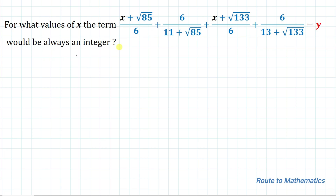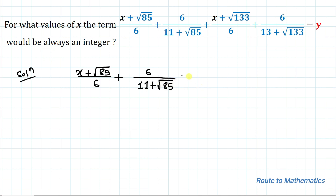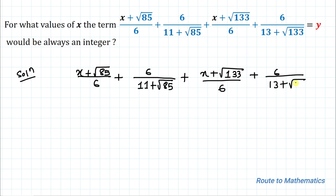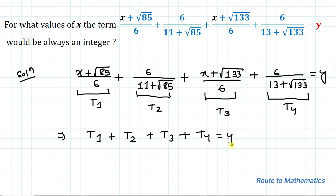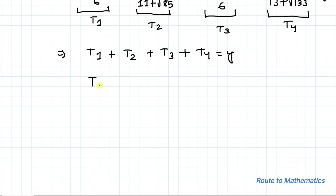So we are asked for what values of x the expression y is an integer. Without any delay, let's start the solution. We have the full expression set equal to y. In the next step, let's assume the first term as t1, the second term as t2, the third term as t3, and the fourth term as t4. This implies the equation becomes t1 + t2 + t3 + t4 = y.